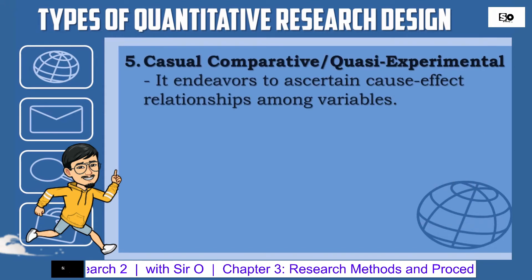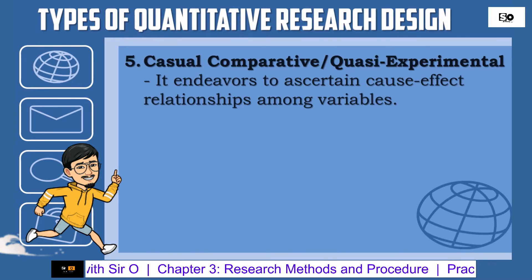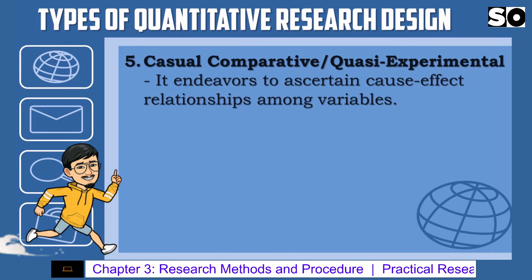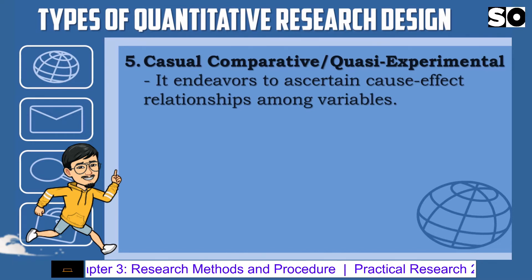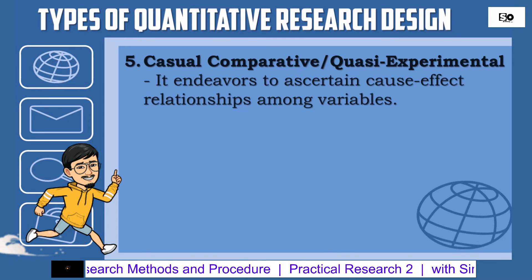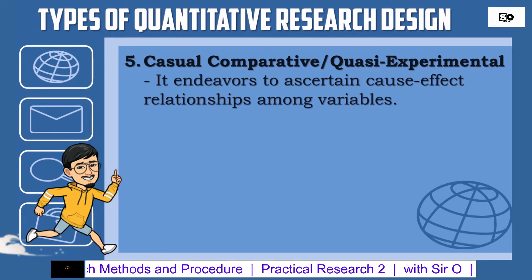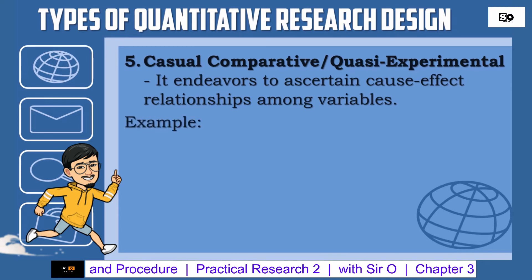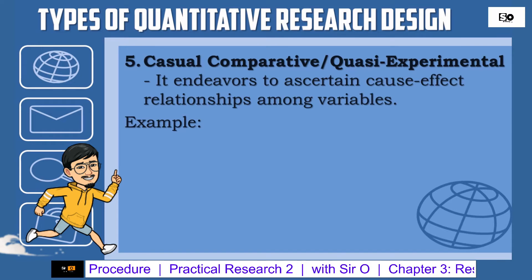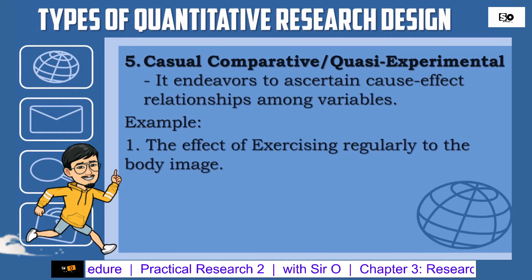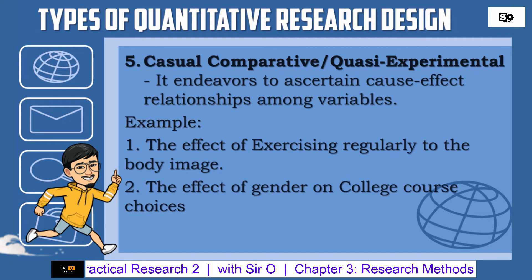The last type of quantitative research design is the causal-comparative or quasi-experimental. It endeavors to ascertain cause-and-effect relationships among variables. This type of research is very similar to true experiments but with key dissimilarities, such as: 1. An independent variable is identified but not manipulated. 2. The effects of the independent variable on the dependent variable are measured. Examples: 1. The effect of exercising regularly on body image. 2. The effect of gender on college course choices.